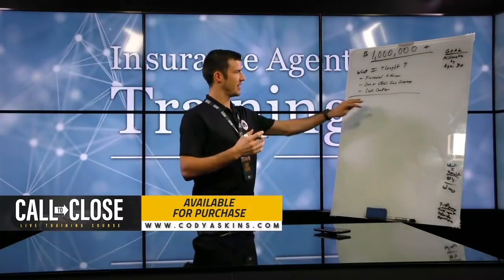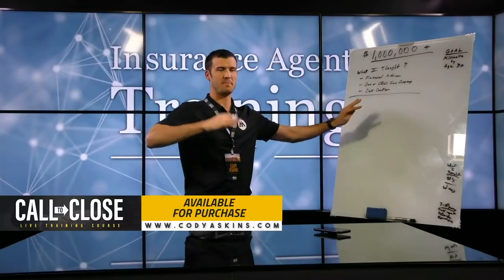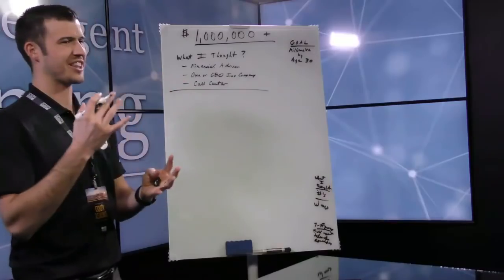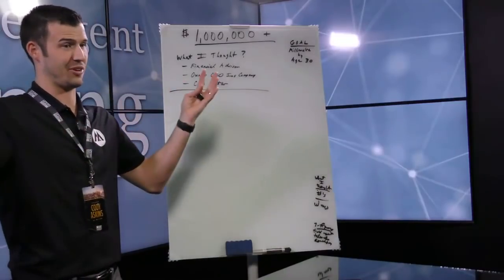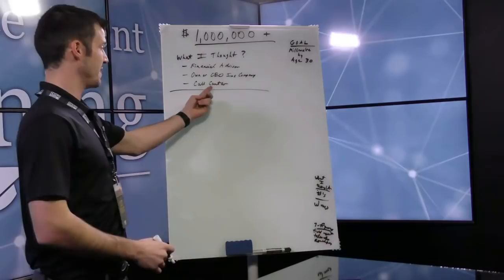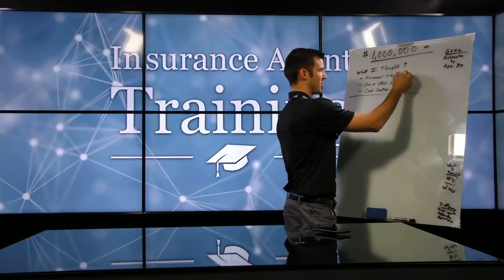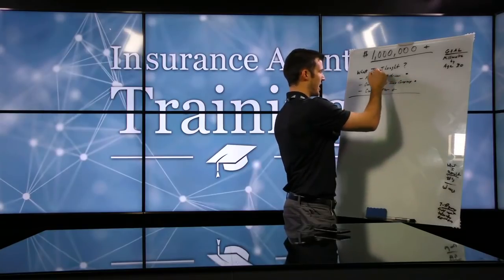When you guys are like, Hey, I don't know that I'm going to get value from this call to close live training. You don't know what you don't know. I can promise you you're going to get value. And there's things that I'm going to touch on that you don't know that are worth $97 to know. So that's what I thought. That's what I thought when I talk about making seven figures by the age of 30, those are the things that I thought I had to do. I just, I didn't know any better.